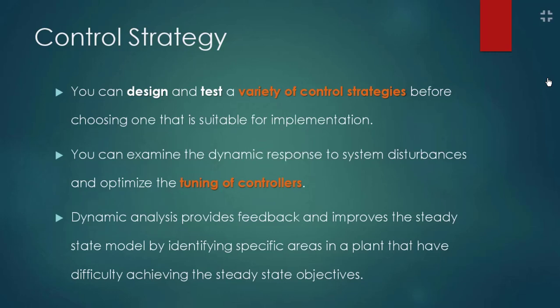You can also examine the dynamic response to system disturbances and optimize the tuning of controllers. For each controller you have tuning parameters — for PID controllers: P, I, and D, or KC, TI, TD — these parameters affect the response of the controller to disturbances. Whenever a disturbance happens, the tuning parameters affect how fast or slow the controller response is. You can test several tuning values and see the impact in dynamic simulation before testing it on the actual plant.